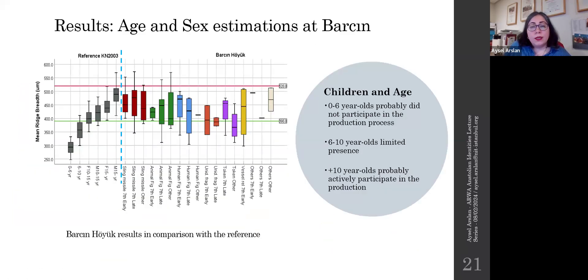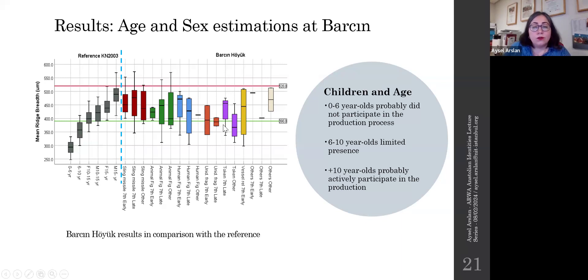The results from my analysis show that age and gender-based labor division in making clay objects did exist at both sites. The statistical analysis made it clear that those up to six years old were probably not involved in the production process. Those between six and ten might have been present but the fingerprint evidence for this is limited, while those over ten years old might have been active participants in the production process.